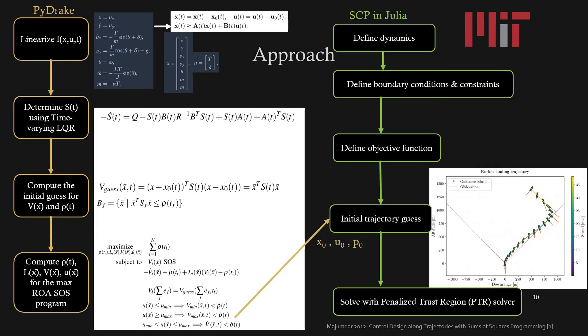From the SOS program, the initial trajectory guess is determined for the sequential convex programming problem. And the penalized trust region solver is used to compute the final trajectory for this large divert problem.